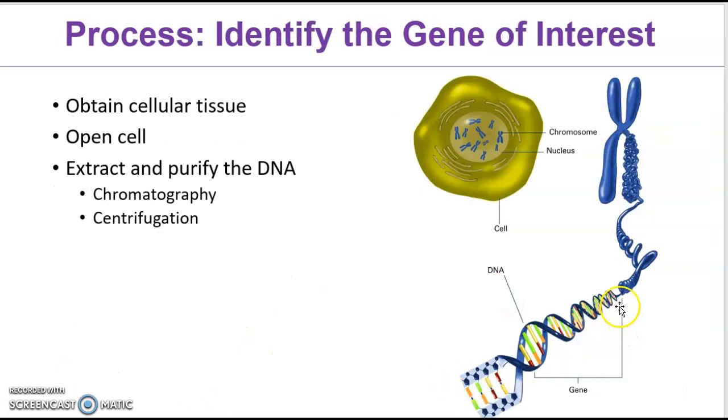So gene cloning to a vector. Remember, you're finding that small gene within a chromosome, within a cell. So you got to crack open that cell, isolate that DNA, and purify it. You can use chromatography or centrifugation, which are both outside the scope of what you need to know, but those are biochemical processes you are welcome to look up if you are interested.